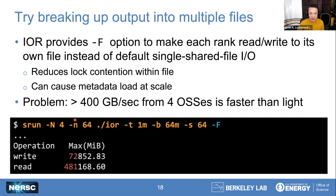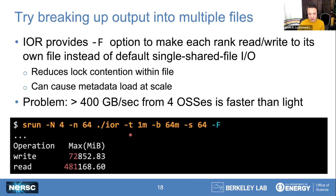The very first fix is adding the -F option (uppercase F). This switches IOR from writing to a single shared file to one file per MPI process, eliminating all the lock contention across compute nodes, because every single MPI process has its own file it never has to share with anyone. When we add -F, write performance goes from 9 gigabytes per second to 70 gigabytes per second — awfully close to what we'd expect from a 120 GB/s file system. Of course, read performance is still faster than light, so something else is going on.